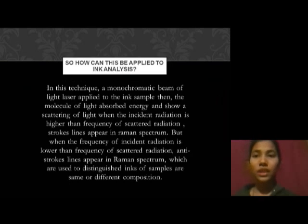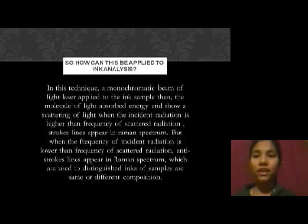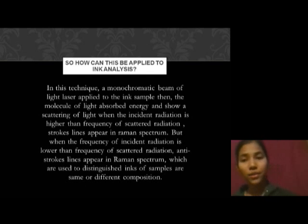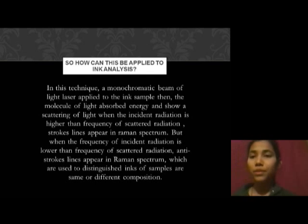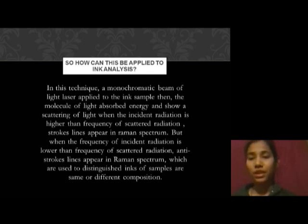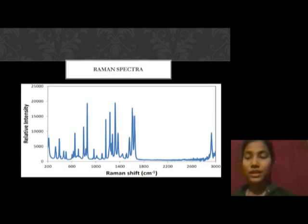So how can this apply to ink analysis? In this technique, a monochromatic beam of light falls on an ink sample. Then molecules absorb light and show scattering. When the frequency of incident radiation is higher than the frequency of scattered radiation, Stokes lines appear in the Raman spectrum. But when the frequency of incident radiation is lower than the frequency of scattered radiation, anti-Stokes lines appear in the Raman spectrum. These are used to distinguish whether ink samples are of the same or different composition. This is a Raman spectrum.